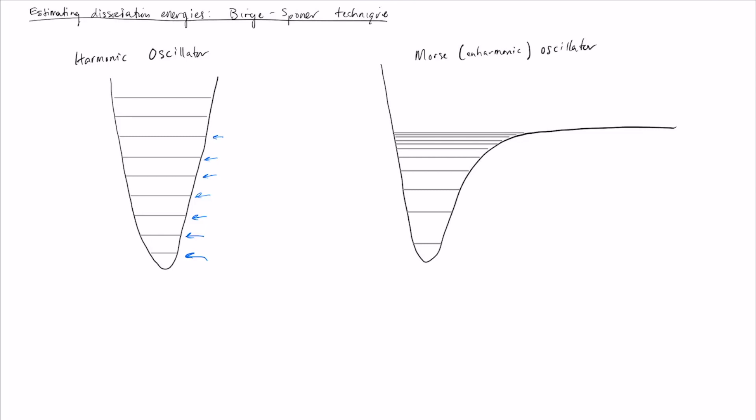On the right, we have an anharmonic oscillator, a Morse oscillator, which is still a simple model that we can solve analytically, but it is now anharmonic. You see two important things: the energies are no longer evenly spaced, and there is a maximum energy above which a particle would have enough energy to escape this well.